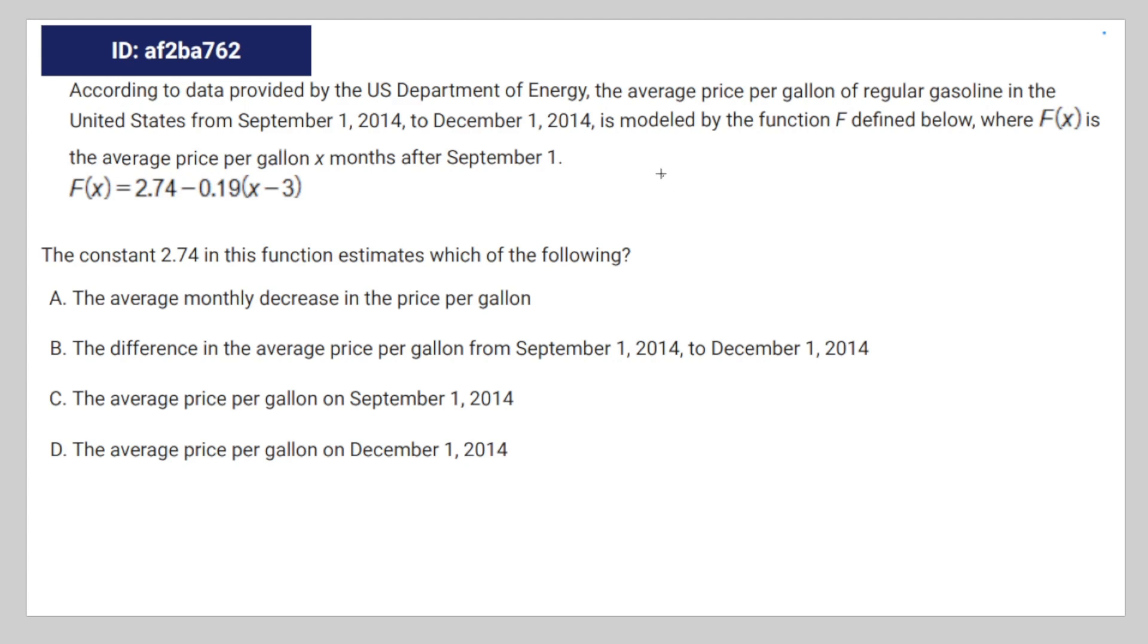And in the event that x is equal to 3, the f of x would look something like this. F of 3 is equal to 2.74 minus 0.19 times 3 minus 3, which is equal to 2.74 minus 0.19 times 0, which is just 2.74.